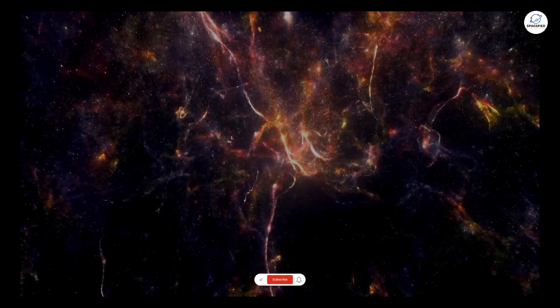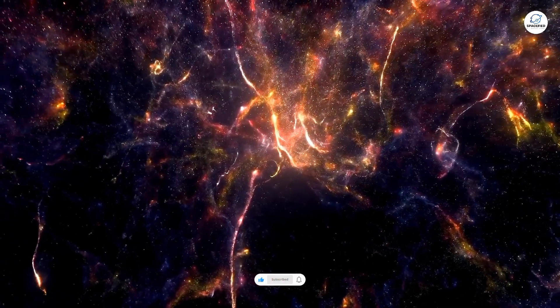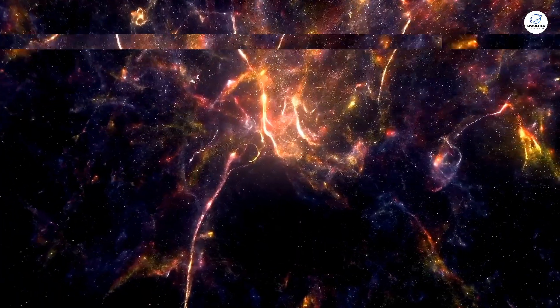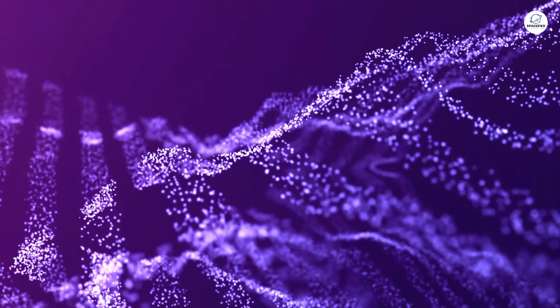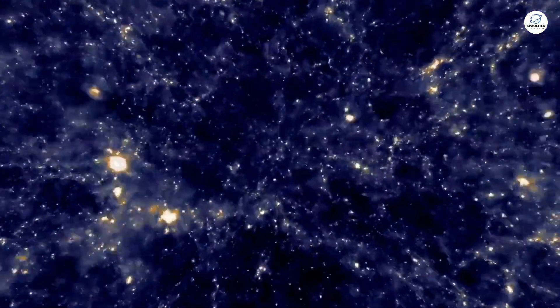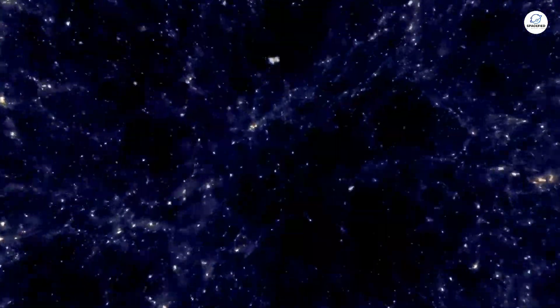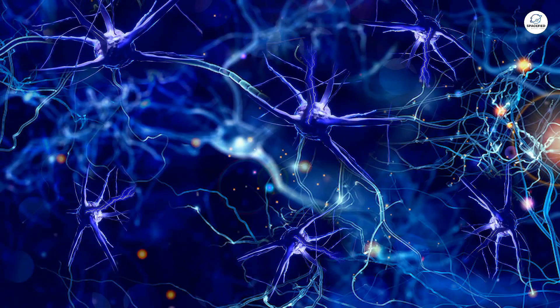Think about it. Both are vast networks of interconnected nodes - neurons in the brain and galaxies in the universe. A study in Nature's scientific reports found that the distribution of matter in the universe and the structure of the brain's neural networks have strikingly similar patterns.